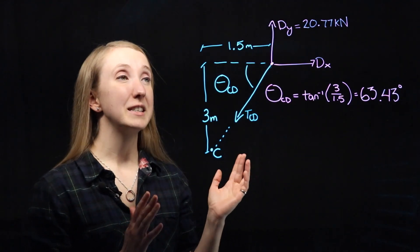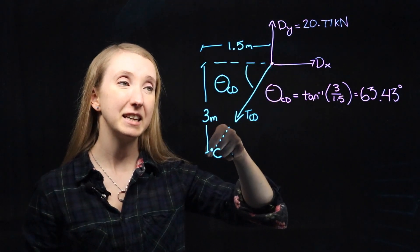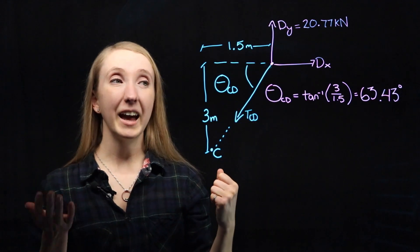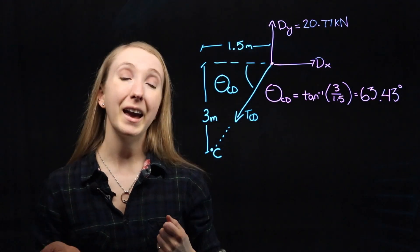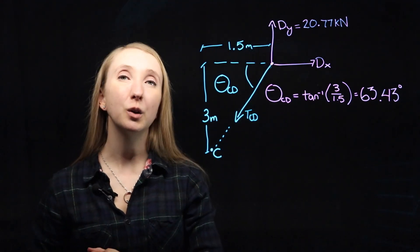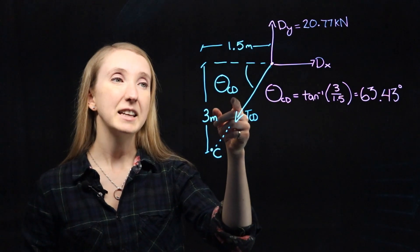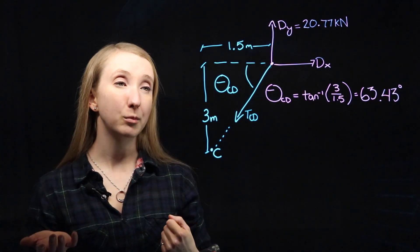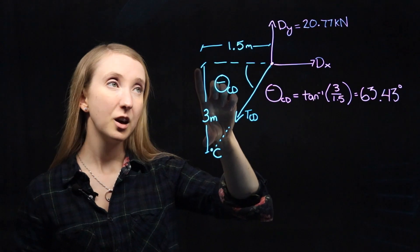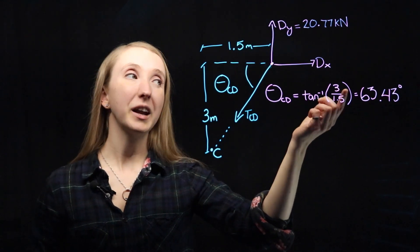So our free body diagram of joint D. We have the tension coming from the cables between joints C and D and we call it TCD. It pulls away from the joint. And the angle that that tension makes is the same angle that that cable makes from geometry because the cable can only take load along its axis. So the angle with the horizontal is called theta CD and it can be solved for using the geometry we were given. So theta CD is equal to the arc tan of the opposite length over the adjacent length, which will give us an angle of 63.43 degrees.